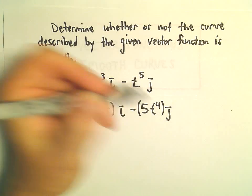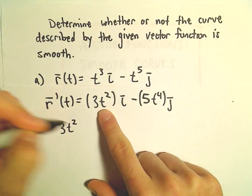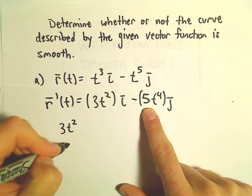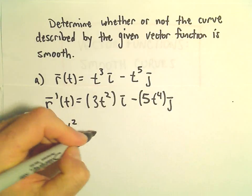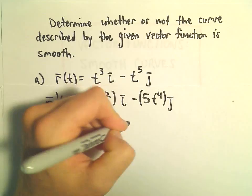And now what we do is we look at each one of our components here. So we look at 3t squared and we look at 5t to the fourth. And we have to ask ourselves, are these continuous functions?